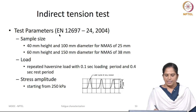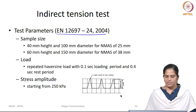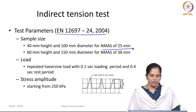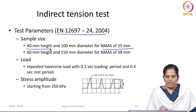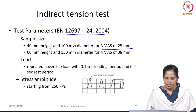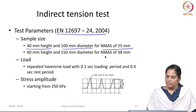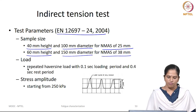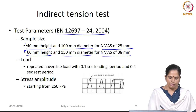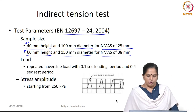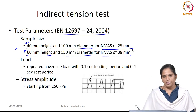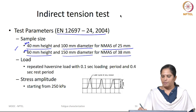EN standard recommends a testing procedure for conducting this test. For preparation of bituminous mixture, if you use a nominal maximum size aggregate of 25 mm, you need a minimum height of 40 mm and diameter of 100 mm. If the nominal maximum size aggregate is 38 mm, you use at least a minimum height of 16 mm with a diameter of 150 mm. This is the minimum dimension prescribed by EN standard. You can either use a gyratory compactor, a slab compactor, or it can even be a field sample.